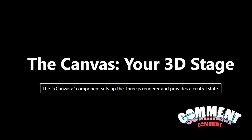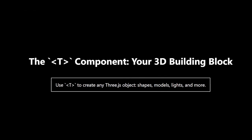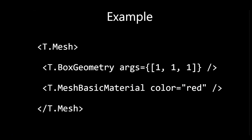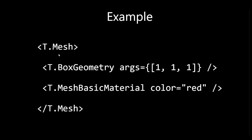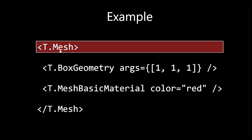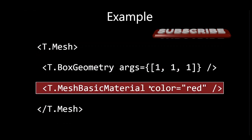The building block is the t-component. The t-component is your go-to tool for creating any 3.js object. You can use it to create anything from simple shapes like boxes and spheres to complex 3D models. Let's say you want to create a red box in your scene — you could use the following code. Here, t.mesh represents the 3D object itself, t.boxgeometry defines its shape as a box, and t.meshbasicmaterial gives it a red color.